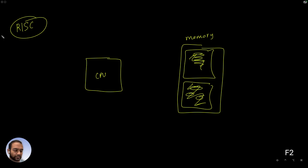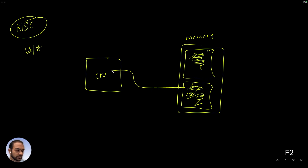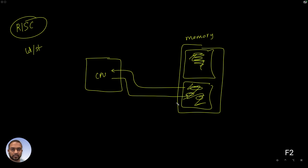The RISC architecture essentially is a load and store architecture. What that essentially means is any computation that we want to perform on the data, the data must be first fetched into the CPU. The calculation needs to be performed on that, and then that modified data is to be sent back to the memory. So this operation is the load and this operation is the store. This is something we are going to keep in mind and latch on to.